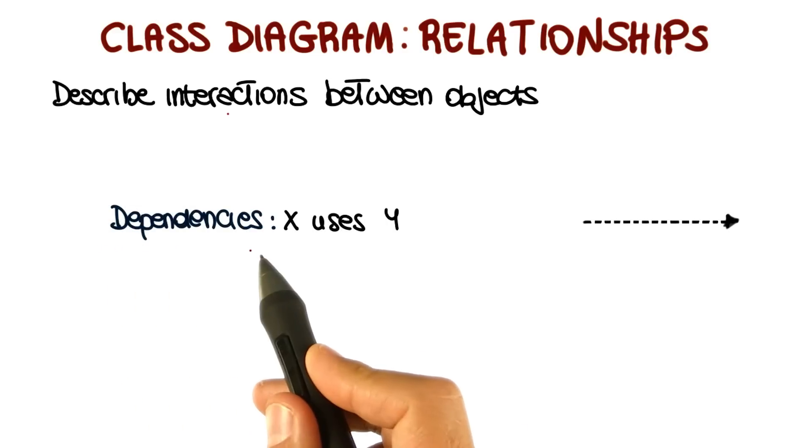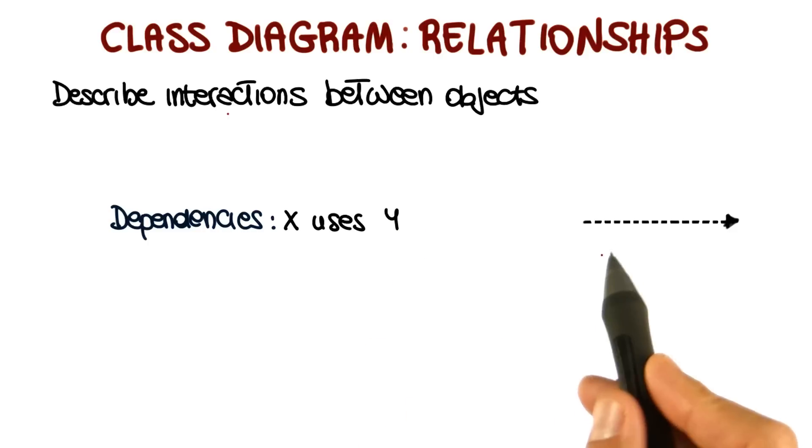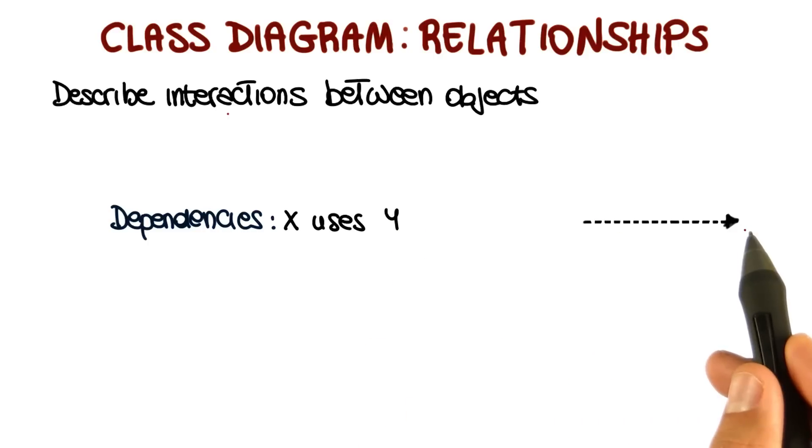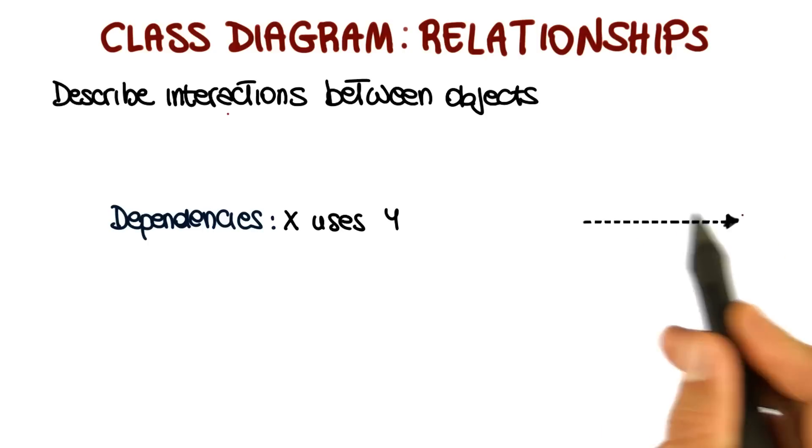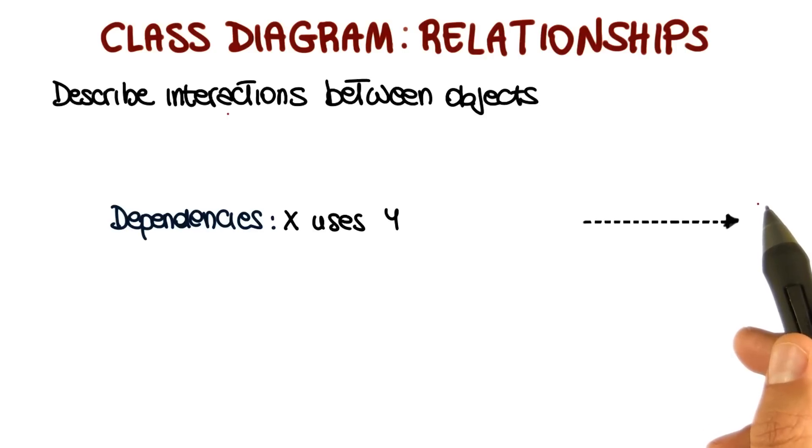The first one is called a dependency relationship, and we can express that as x uses y. And we represent it with a dashed directed line. So when we have such a line between two classes, that means that the first class uses the second one. And we're going to provide an example of a dependency in a minute.